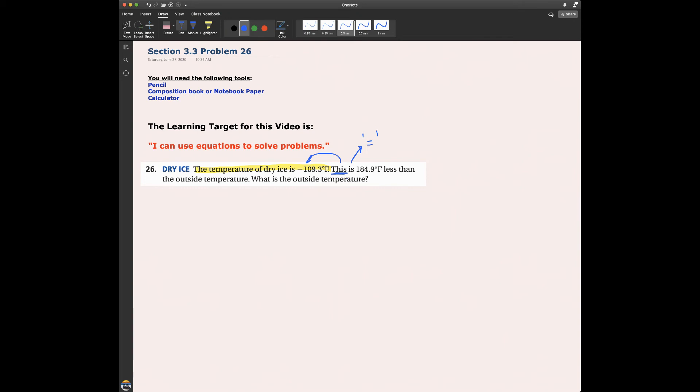This is 184.9 degrees Fahrenheit less than the outside temperature. So if the outside temperature is 52 degrees, then this temperature of dry ice would be 52 minus 184. That's kind of how I would think about this problem.